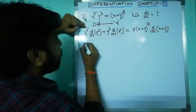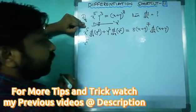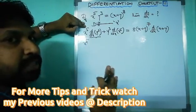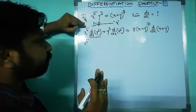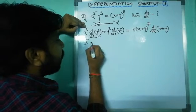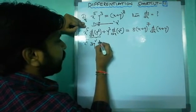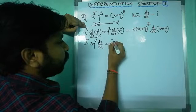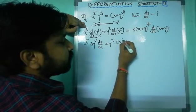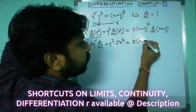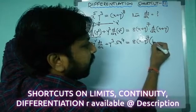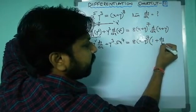Expanding: x^5 times the derivative of y^3 with respect to x is 3y squared times dy/dx, plus y^3 times the derivative of x^5 which is 5x^4. That equals 8 times (x plus y)^7 times d/dx of (x plus y). The derivative of x is 1 and the derivative of y is dy/dx.